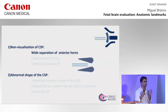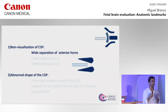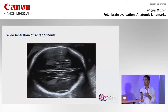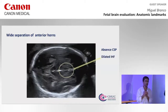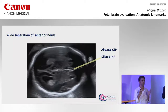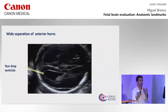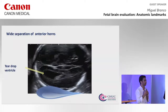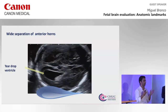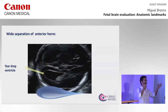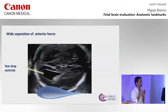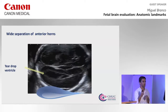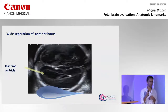For the first group, we start with absent CSP and wide separation of the anterior horns. In this case we are not able to identify the CSP and we have a wide interhemispheric fissure. In association with colpocephalic lateral ventricles and wide separation of the anterior ventricles, this gives the teardrop aspect of the ventricle, which is very suggestive of complete agenesis of the corpus callosum.